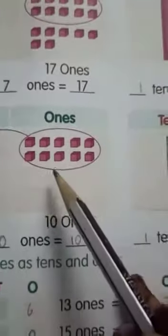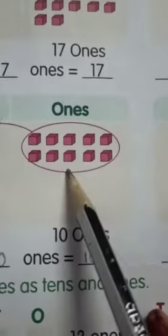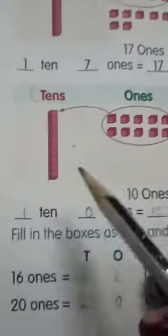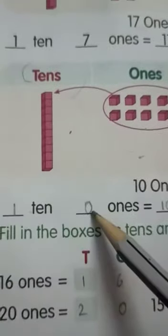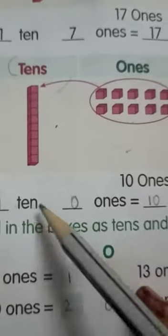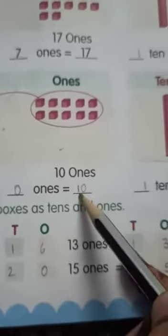Similarly, here we have only 10 ones. 10 ones is nothing but 1 ten. And, here we have no ones. So, 1 ten and 0 ones makes 10.